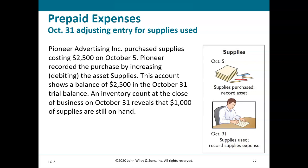Example — supplies: Pioneer Advertising purchased supplies costing $2,500 on October 5th, recorded as a debit to the asset Supplies. The October 31st trial balance shows $2,500. An inventory count at October 31st reveals $1,000 of supplies still on hand. Since $1,500 was used, the adjusting entry is: debit Supplies Expense $1,500, credit Supplies $1,500.